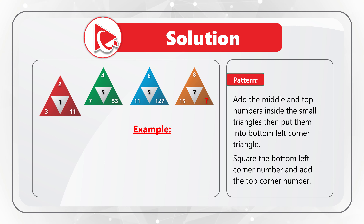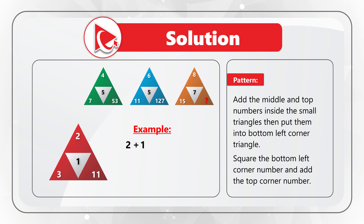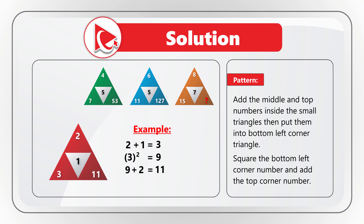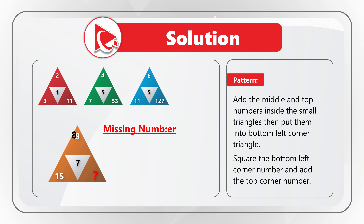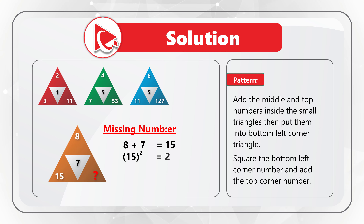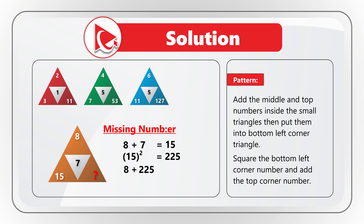Let's look at the first triangle: 2 plus 1 equals 3, 3 squared equals 9, and 9 plus 2 equals 11. Armed with this, let's find the missing number. First, add 8 plus 7 (top and middle numbers): 8 plus 7 equals 15 — you can confirm this by looking at 15 in the bottom-left corner. 15 squared equals 225, then add 8, giving us the final answer of 233.